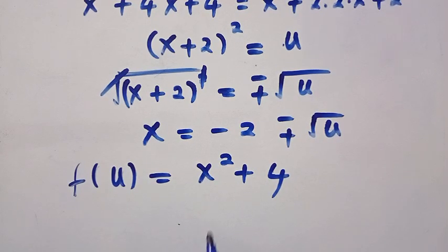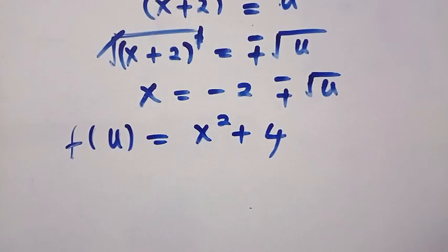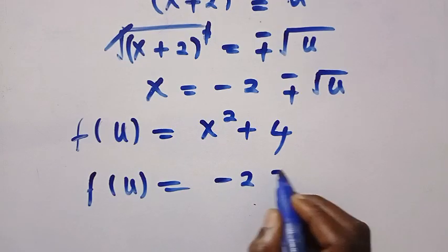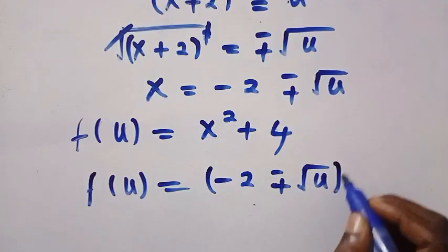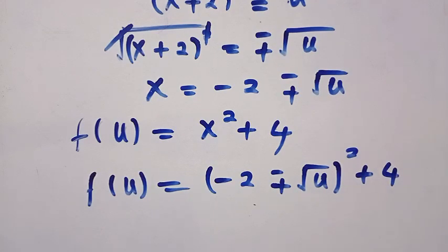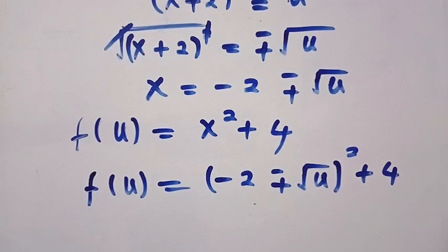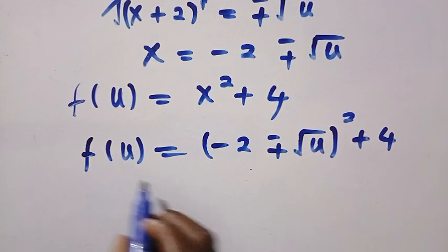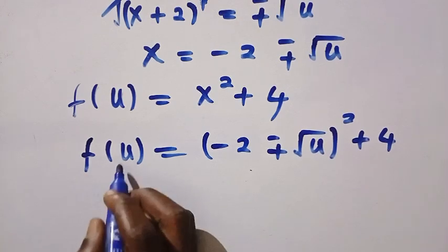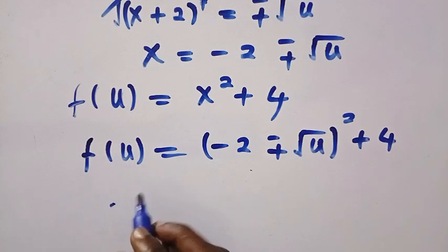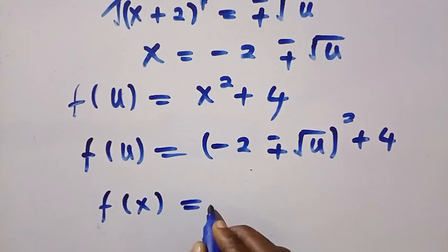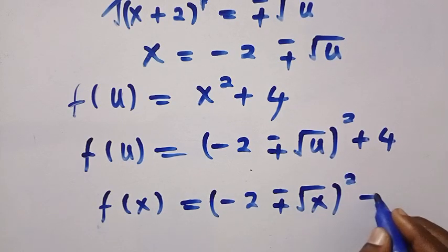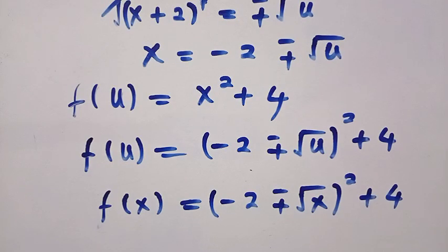We need to find x squared, so we substitute x equals minus 2 plus or minus square root of u directly. We have f of u equals (minus 2 plus or minus square root of u) all raised to power 2, plus 4. Since u and x are both members of the real numbers, we replace u with x to get f of x equals (minus 2 plus or minus square root of x) all squared, plus 4.